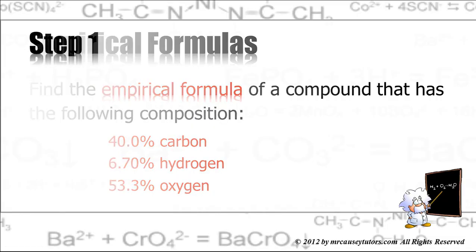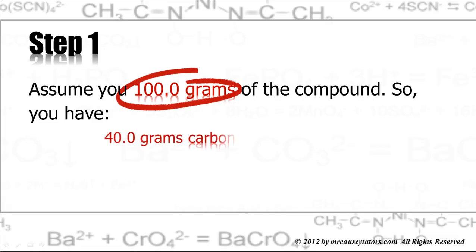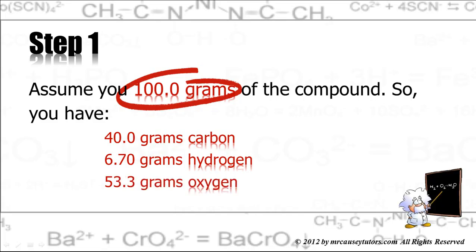All right, one of the first things we want to do is step one, assume that we have 100 grams of the compound. The reason I've chosen 100 grams is it makes the math easier. It's easier to work with 100 grams or multiples of 10 than is anything else. And so that would give us 40 grams of carbon, 6.70 grams of hydrogen, and 53.3 grams of oxygen.